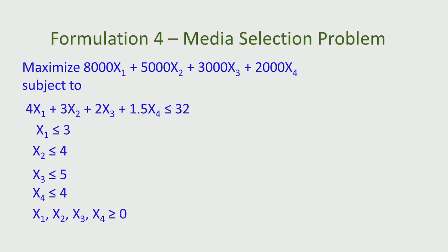There are several constraints. The first constraint is the budget restriction. x1 advertisements in television cost 4·x1 lakhs, x2 in newspaper cost 3·x2 lakhs, x3 in website cost 2·x3 and x4 in radio cost 1.5·x4. So the total spending is 4·x1 + 3·x2 + 2·x3 + 1.5·x4, which cannot exceed 32 lakhs.